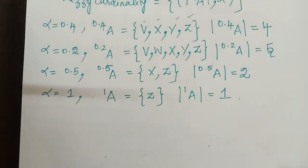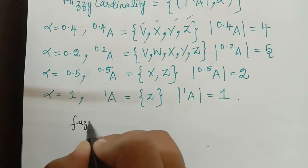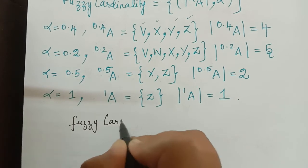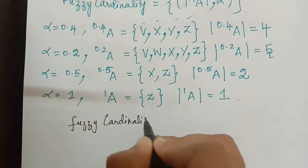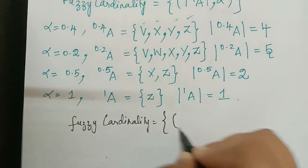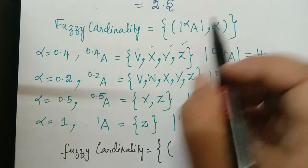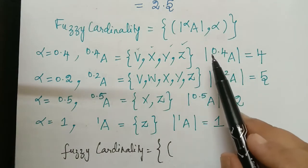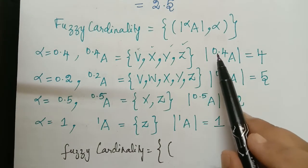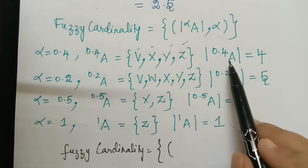So therefore the fuzzy cardinality will be equal to the set of all ordered pairs. Now how is the ordered pair? Modulus of alpha cut of A. So what is the first value of alpha? 0.4. So modulus of 0.4 of A. So what is this value? It is 4.